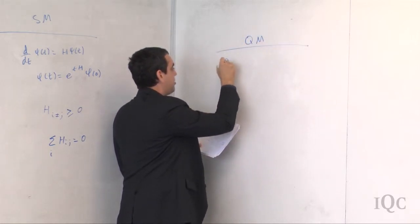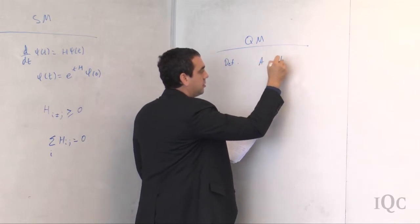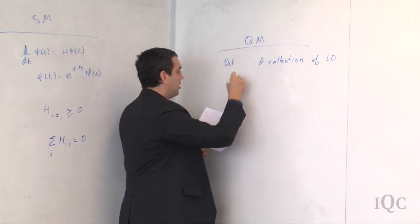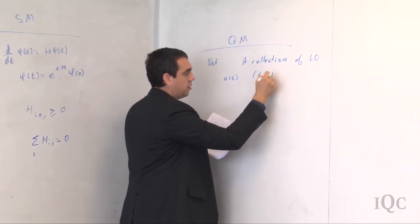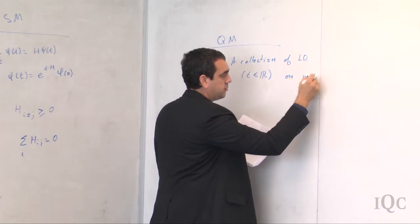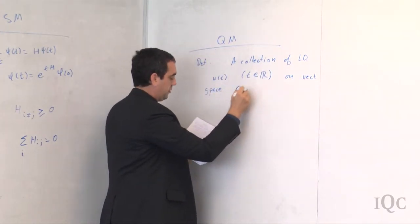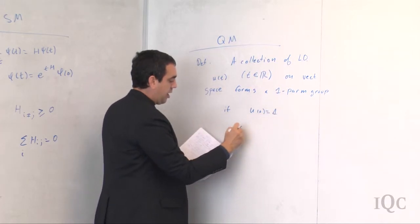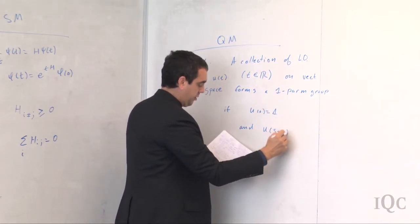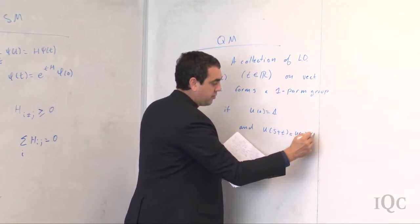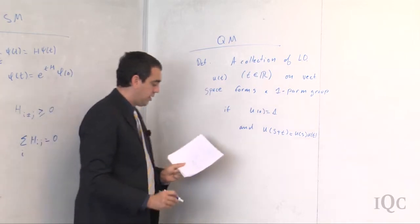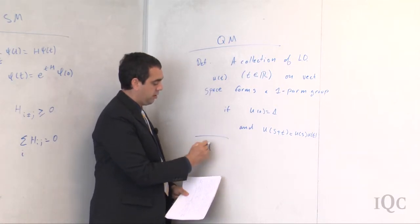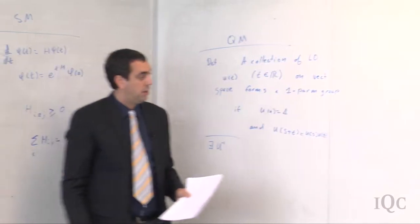A collection of linear operators U(t), where t is a time coordinate on some vector space, forms a one-parameter group if U(0) equals the identity and U(s+t) = U(s)U(t) for all s, t in ℝ. The other implication in quantum physics is that U inverse exists.